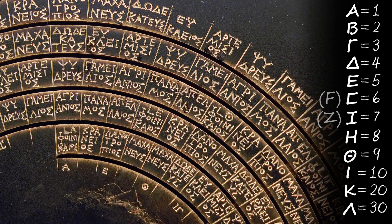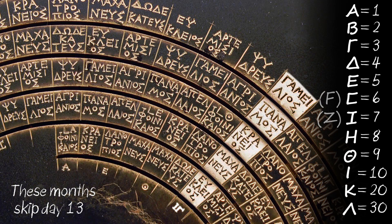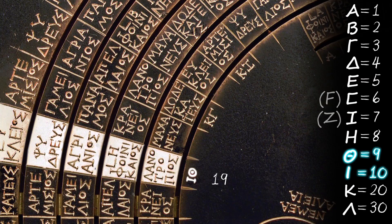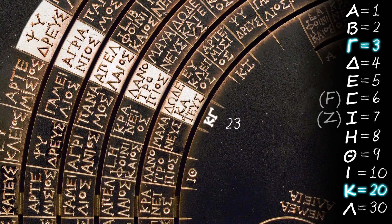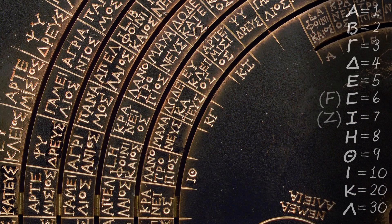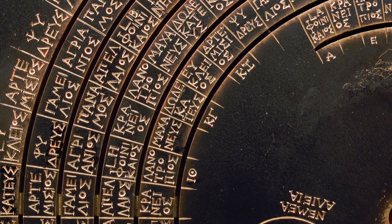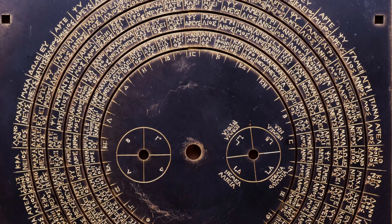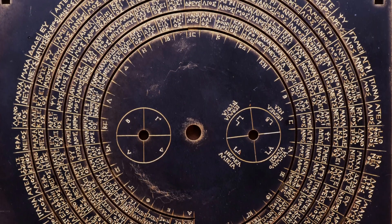For higher numbers, the numbering system is additive. So for example, iota gamma represents 10 plus 3, or 13, iota theta 19, kappa gamma 23, and so on. And so the mechanism provided the user with a comprehensive layout of the excluded days of each month for the entire 235 month cycle.